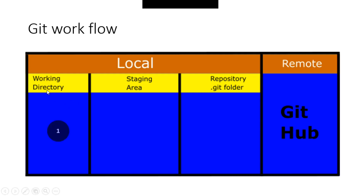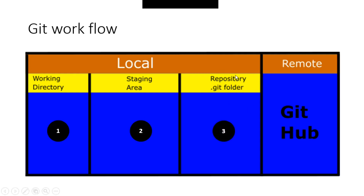The first one is working directory, the second one is staging area, and the third one is local repository. The fourth one is GitHub repository. You can see the repository in the local directory or GitHub or other online hosts.